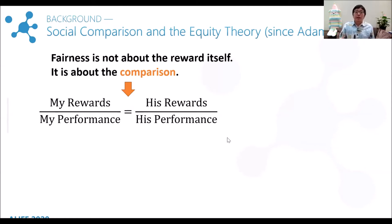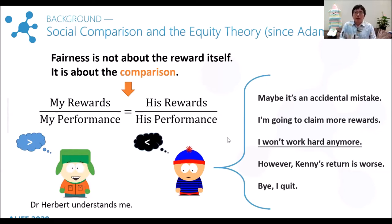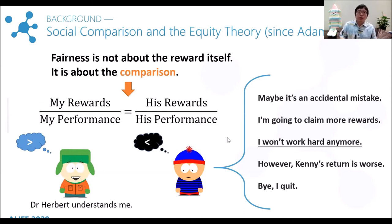It indicates individuals evaluate their returns by comparing the ratio of rewards to their performance. If one sees himself in an unfair situation, there are some typical responses. If it happens occasionally, one may forgive it and request an adjustment of the rewarding scheme. If it becomes a usual case, one will seek opportunities to leave this environment. In most situations, one may feel frustrated and angry and reduce his or her engagement as a response. Besides, another typical response is to change his reference, which somewhat helps an individual get rid of his frustration for the injustice.